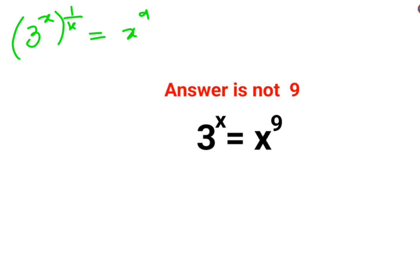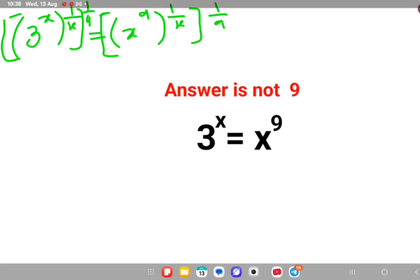I will do the xth root on both sides. At the same time I can do the ninth root also so that the variable and the constants can come on their respective sides.